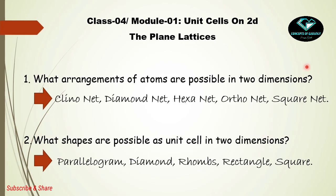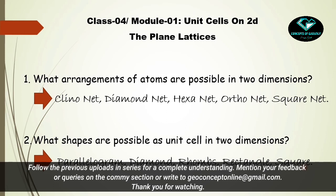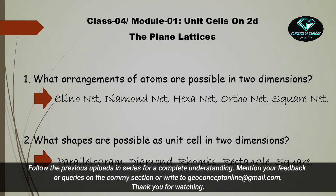To summarize: what arrangements of atoms are possible in two dimensions? There are five — clinonet, diamond net, hexanet, orthonet, and square net. What shapes are possible as unit cells in two dimensions? There are only five basic shapes: parallelogram, diamond, rhombus, rectangle, and square. With this we have come to the end of this class. We will meet again in the next class with the three-dimensional arrangement of atoms. Goodbye and thank you for watching.